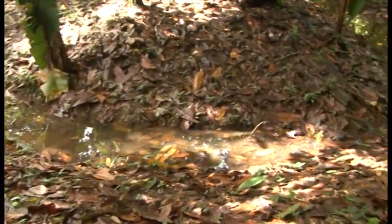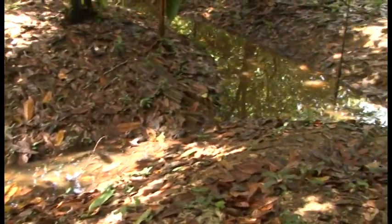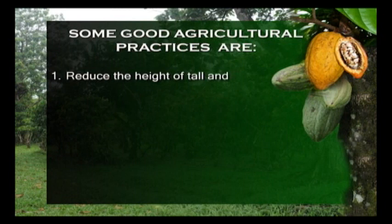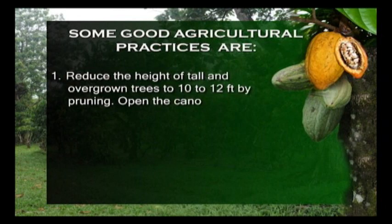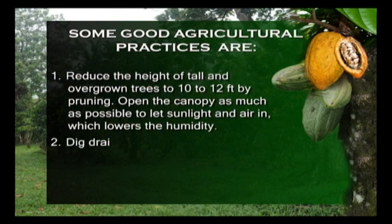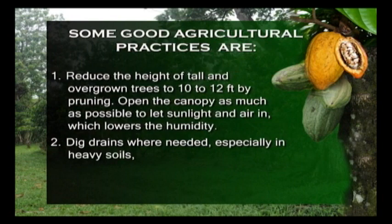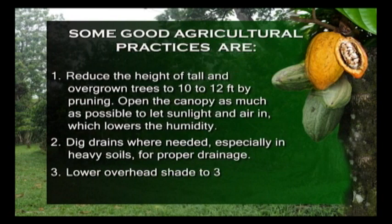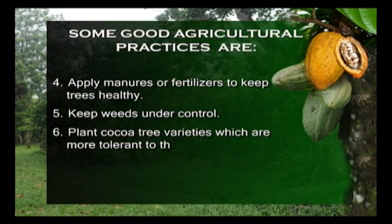Some good agricultural practices which will reduce the incidence of black pod disease are: reduce the height of tall and overgrown trees to 10 to 12 feet by pruning; open the canopy as much as possible to let sunlight and air in, which lowers the humidity; dig drains where needed, especially in heavy soils for proper drainage; and lower overhead shade to approximately 30 to 35%. Apply manure or fertilizers to keep trees healthy.